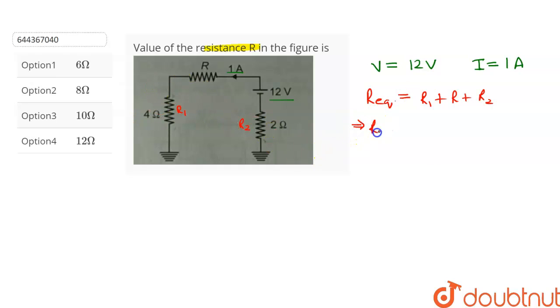So this comes out to be Req is equal to R1 is 4 ohms plus R plus R2 is 2 ohms. So we get Req is equal to R plus 6 ohms.